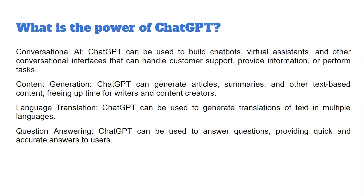Language translation is another capability — it can translate from one language to another. For question answering, similar to search engines, you put in a question and it provides an answer. There is a limitation though: ChatGPT is not 100 percent accurate, because it is trained in a supervised manner, where these are the questions and these are the possible answers.